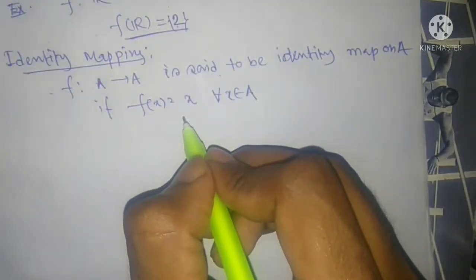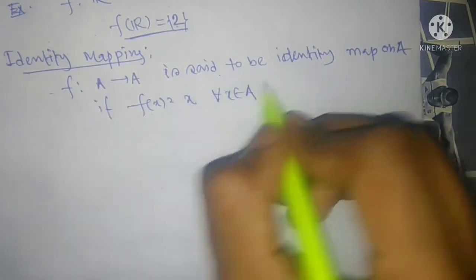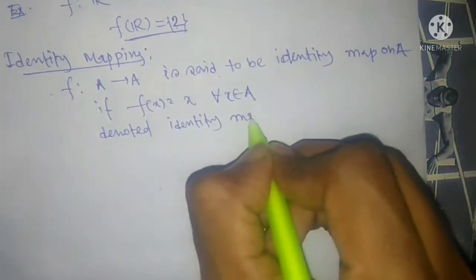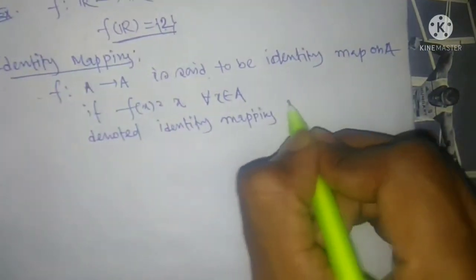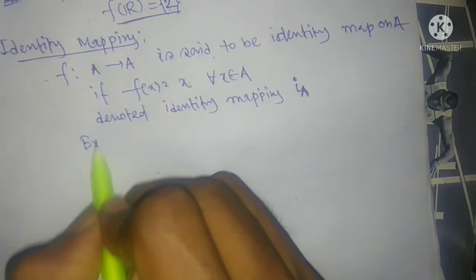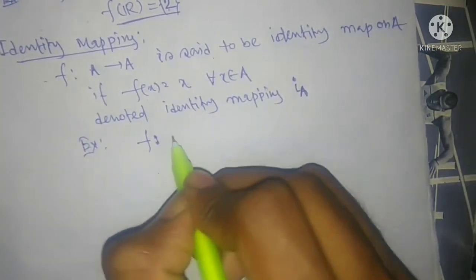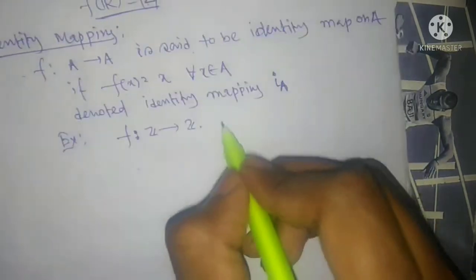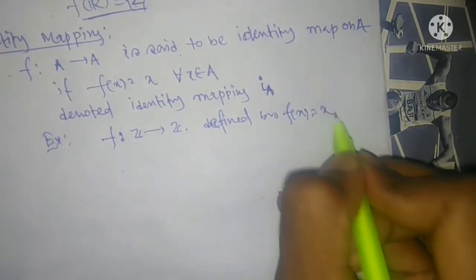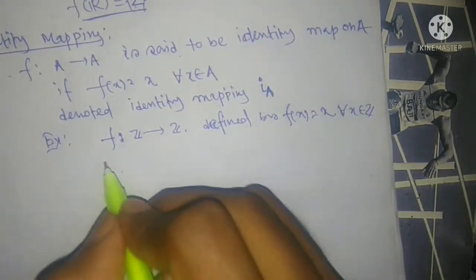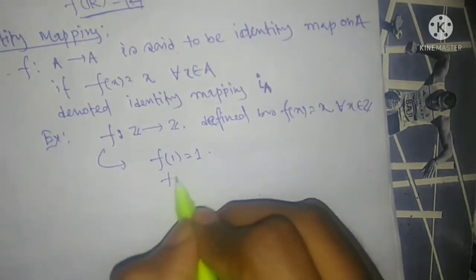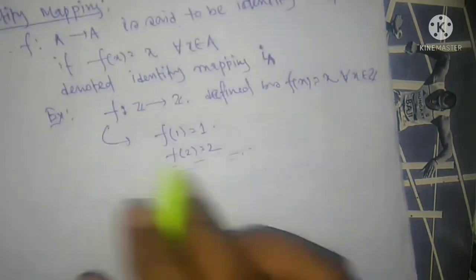For example, f(1) = 1, f(2) = 2, and so on. The identity mapping is denoted as I_A (identity of A). An example: f from ℤ to ℤ defined by f(x) = x for all x belonging to ℤ. Since f(1) = 1, f(2) = 2, this is an identity mapping.